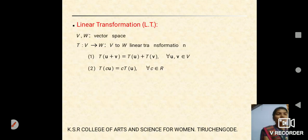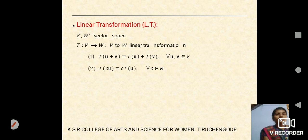Definition of linear transformation: V and W are vector spaces and T is a mapping from vector space V into vector space W. Then T is said to be a linear transformation if it satisfies two conditions. First: T(U + V) = T(U) + T(V). Second: T(cU) = c·T(U), where U and V are vectors belonging to domain V and c is a scalar belonging to the real numbers R.